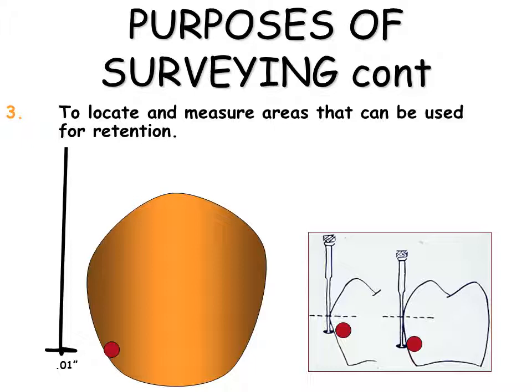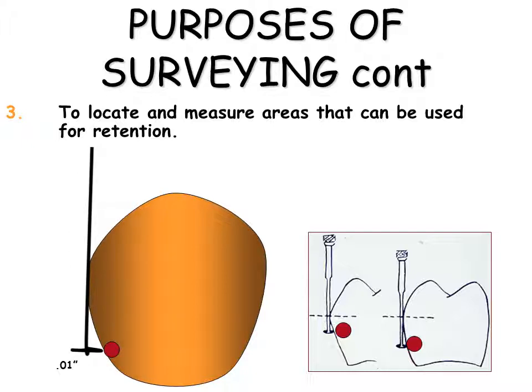Undercut suitable for retention is generally located in the gingival one-third of the tooth. Retention may be located either buccal or lingual. The amount of undercut may be determined with an undercut gauge. Retention should be balanced when possible and opposed across the arch — that is, buccal retention on one side is opposed by buccal retention on the contralateral side.